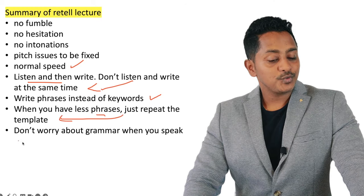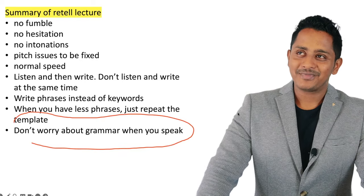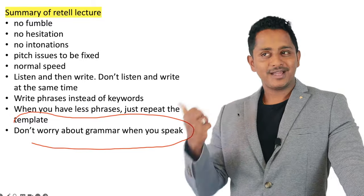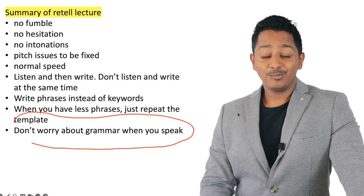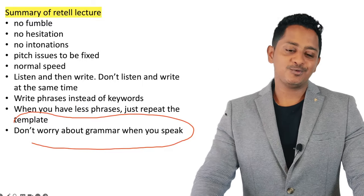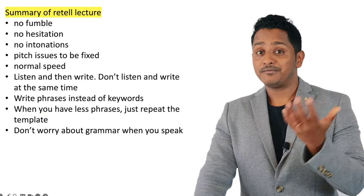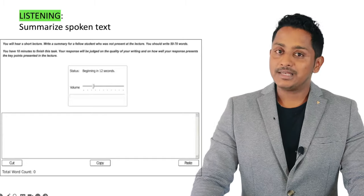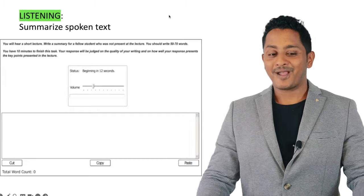Key takeaways for Retell Lecture: listen then write — never simultaneously. Write phrases instead of keywords. If you have fewer phrases, repeat the template. Don't worry about grammar when speaking. The last and most important technique: 90% of people think like a human and worry about what's 'important.' The computer doesn't think like us — it doesn't know what's important and what isn't. Don't worry about missing important content. Just write whatever you caught.